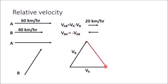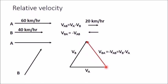This relative velocity is VAB, that is velocity of A with respect to B. It depends on the arrowhead: if the arrowhead points towards VA, then it is VA minus VB. If the arrowhead points towards VB, then it is VB minus VA — the same magnitude but opposite direction. So VBA equals minus VAB, which is VB minus VA.